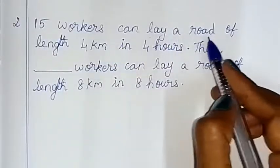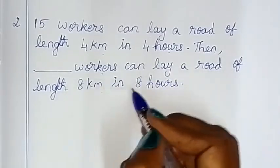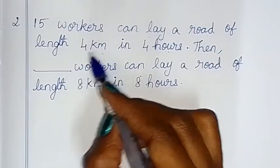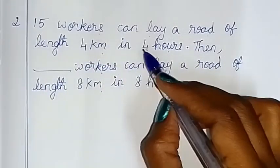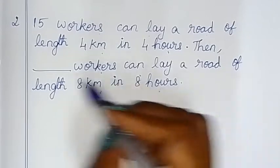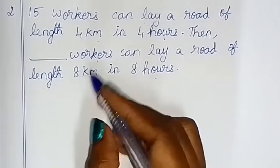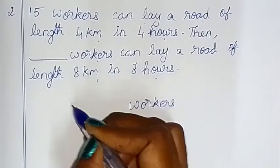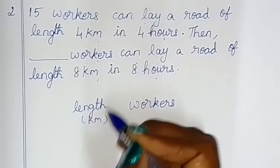Second problem: 15 workers can lay a road of length 4 km in 4 hours. Dash workers can lay a road of length 8 km in 8 hours. So: 4 km length road, 15 workers, 4 hours. 8 km length, 8 hours. The detail column is workers, length in kilometers, and hours.